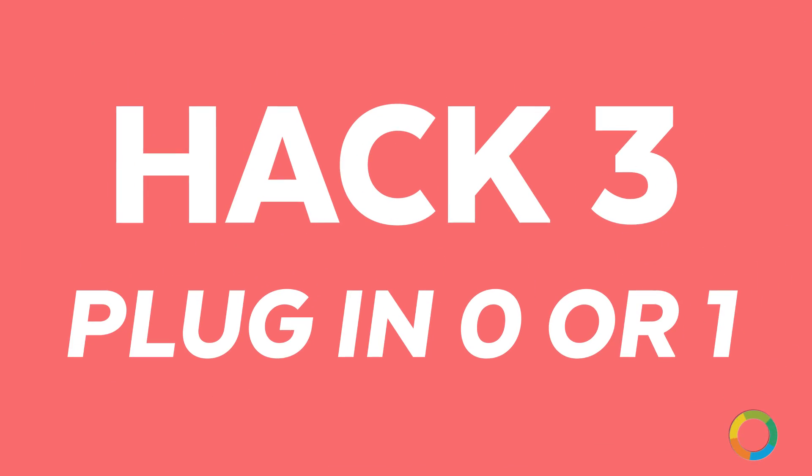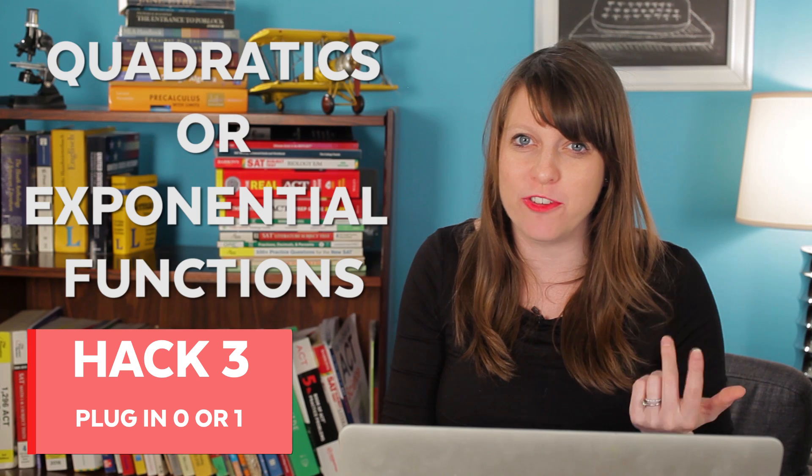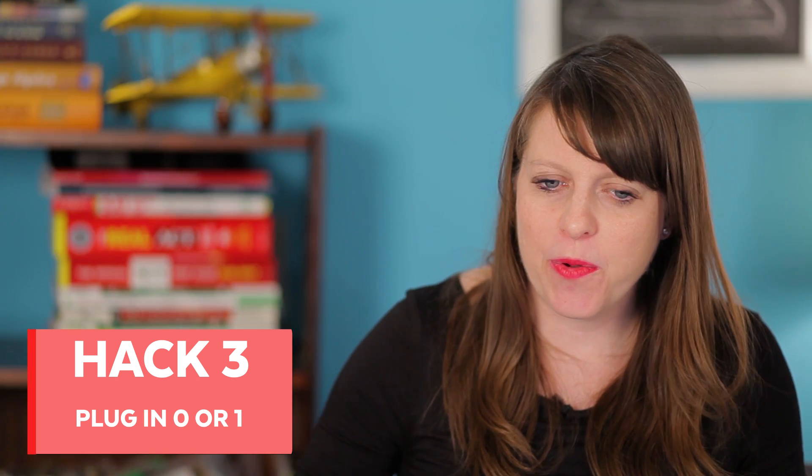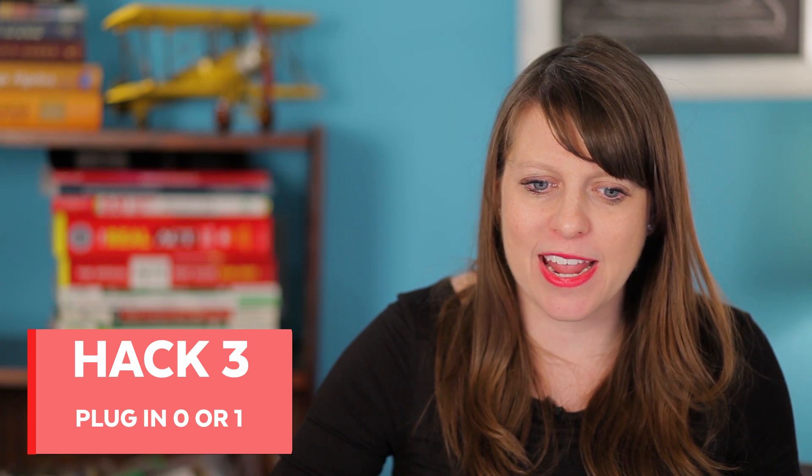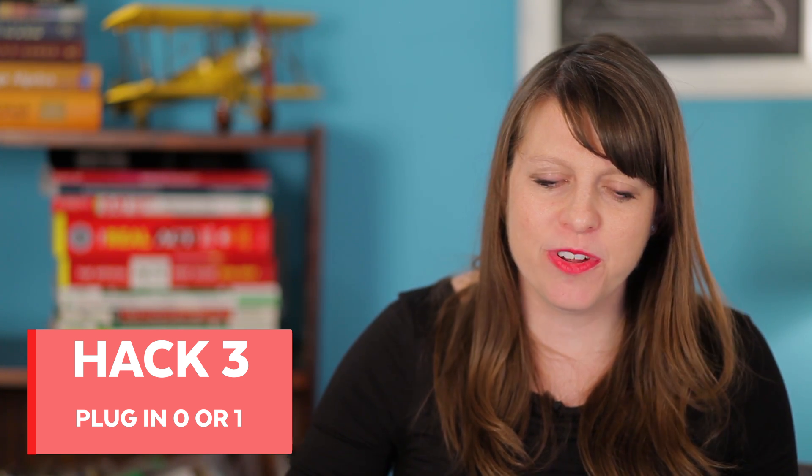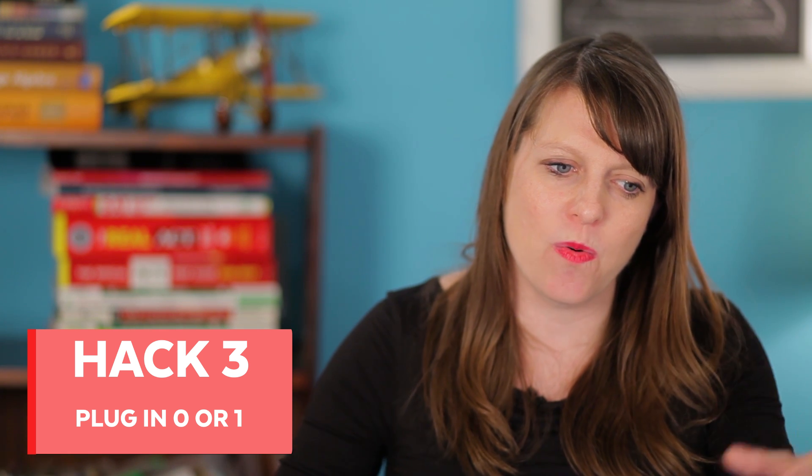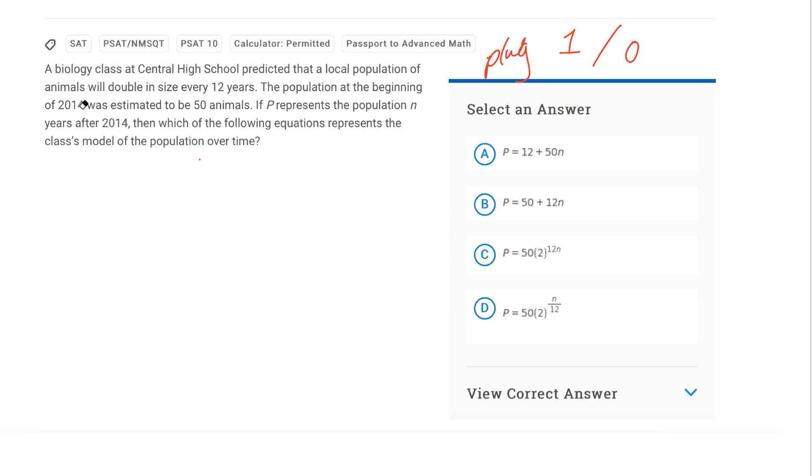It's a great problem solving technique everybody should know. And finally, my third tip is a little bit unique to this test. This one's a little more unique than those last two. And that is the idea of plug in zero or one when in doubt, especially when you have quadratics or exponential functions. When we get these problems and you don't quite know what to do with them, if you plug in zero or one, it can help you kind of eliminate answer choices and get down to what things mean and better understand things. We're going to take a look at how it works right here. A biology class at Central High School predicted that a local population of animals will double in size every 12 years. The population at the beginning of 2014 was estimated to be 50 animals.